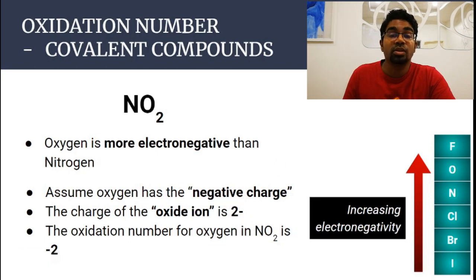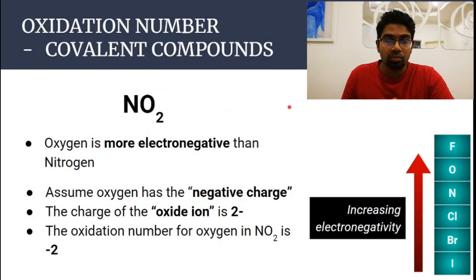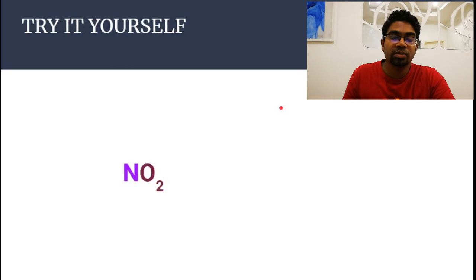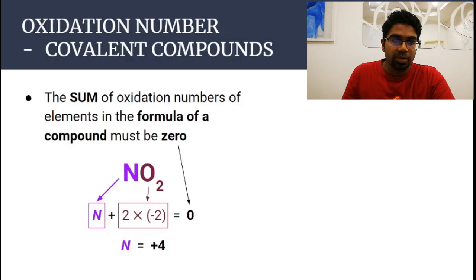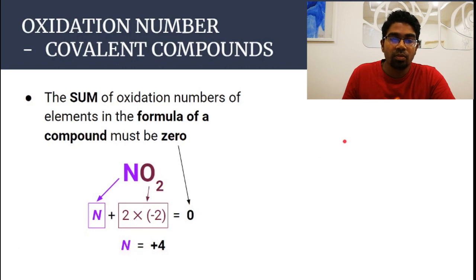To find the oxidation number of nitrogen: because it is a compound, whether ionic or covalent, the sum of oxidation numbers of all elements in the formula must equal zero. Pause the video and try it yourself first. Oxidation number of nitrogen plus two times minus two equals zero. Solving this gives the oxidation number of nitrogen equals plus four. Once again, please do not forget the plus sign in front.